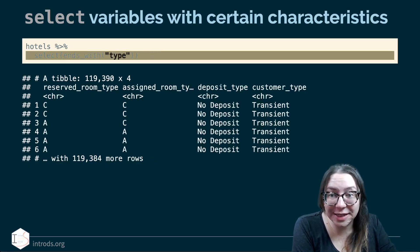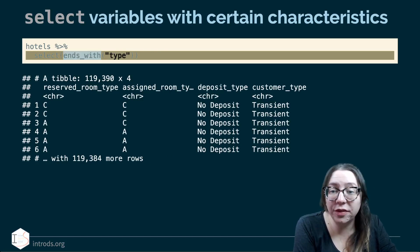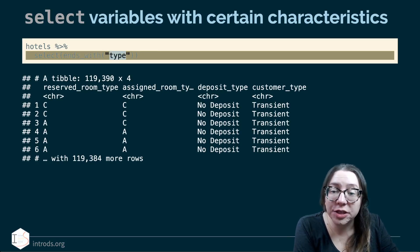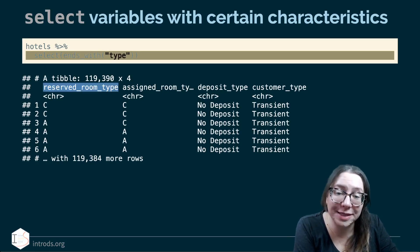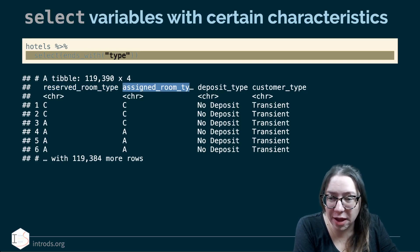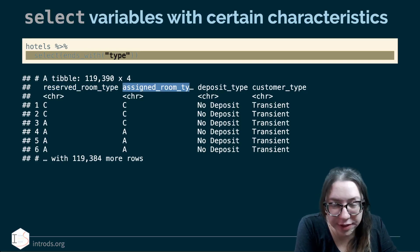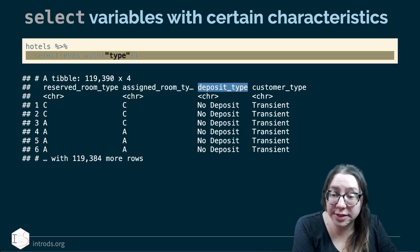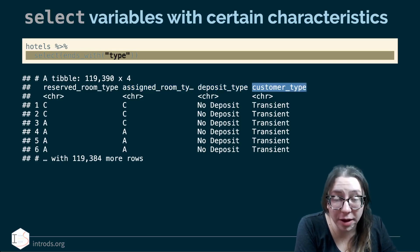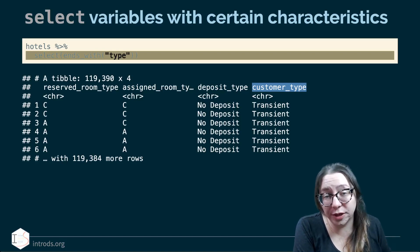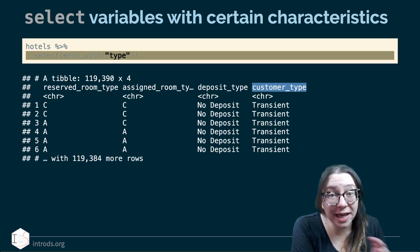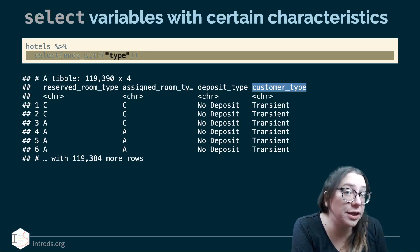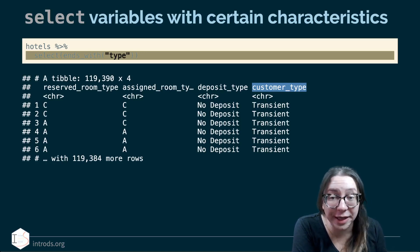Instead of starts_with, we can also use ends_with. Here I'm selecting all variables that end with the character string 'type': reserved room type, assigned room type, deposit type, and customer type. These are the four variables among the 32 that end with the word type. This tells us that if you're putting together a data set, the first thing you might want to do is name your variables sensibly so you can easily access them with these types of selectors.